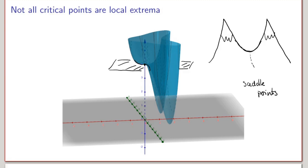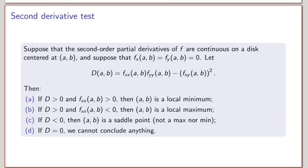Since not all critical points are local maxima or minima, how do we determine which they are? Fortunately there is a test called the second derivative test, analogous to the one-variable version but slightly more complicated. Let f be a function of two variables whose second-order partial derivatives are continuous on a disk centered at a critical point (a, b). Define D(a, b) = f_xx · f_yy − (f_xy)².